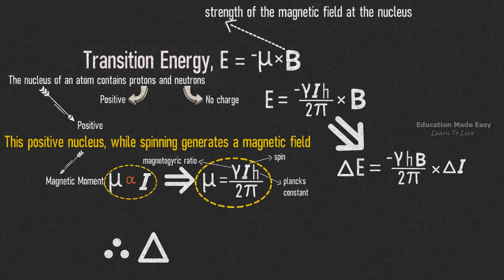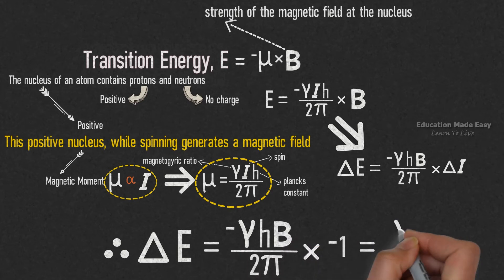Substituting this value, we can write ΔE is equal to negative γh divided by 2π into minus 1 into B, which is equal to γhB divided by 2π.